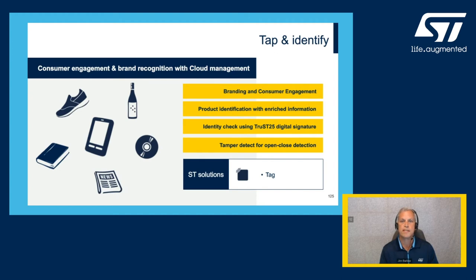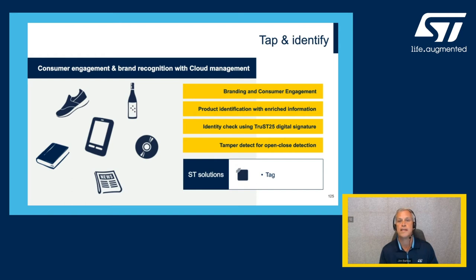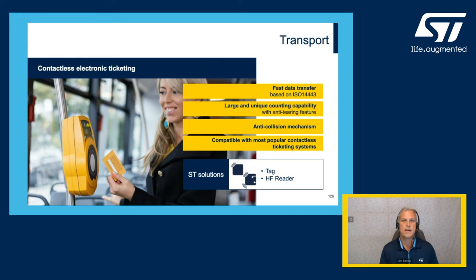Tap and identify is a popular use of an NFC tag. For example, a wine bottle with a tag lets you tap in the store to get reviews and information, or tap while enjoying it to be taken to a web page where you can order another case. It's also a good way to verify product authenticity — you could embed a tag into the fabric of a shoe, for instance, to detect whether it's a clone or genuine.